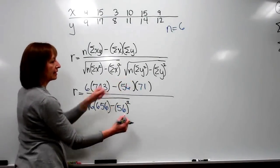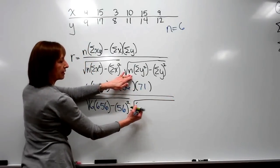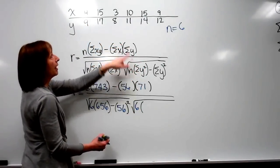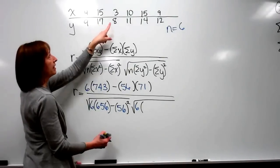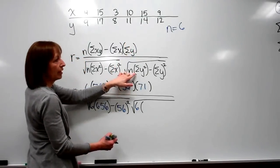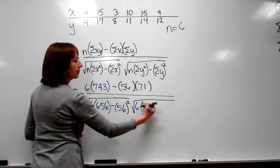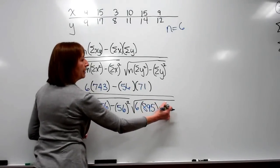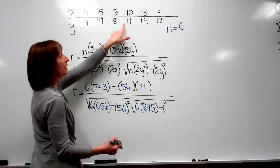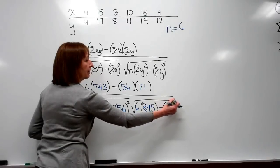And then lastly in the denominator, the square root of, n, the number of ordered pairs, 6, times the square of the y's, and then total that up. And when you take 9 squared plus 17 squared plus 8 squared plus 11 squared plus 14 squared plus 12 squared, that value gives you 895. Minus the total of the y's, just adding 9 plus 17 plus 8 plus 11 plus 14 plus 12, that is 71 and squared.